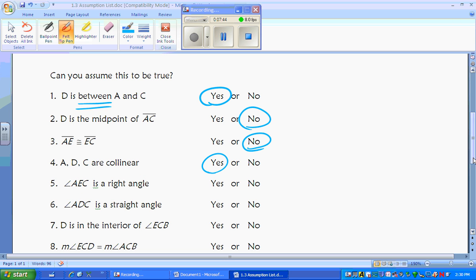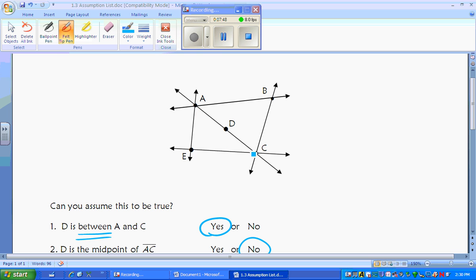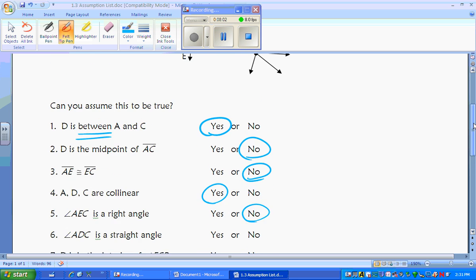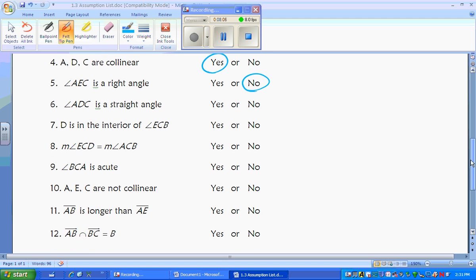Angle AEC is a right angle. Is there a 90 degree angle in the corner? Is there a right angle square in there? No, and you cannot assume that. So you cannot assume something is a right angle. ADC is a straight angle. We learned at the front of the sheet that yes, you can assume something is a straight angle.